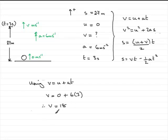So therefore, the rocket is going at 18 meters per second in an upwards direction after three seconds. And that brings us now to the end of this part of the question.